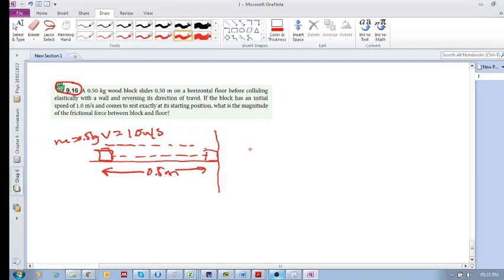So what do we know? Well, it starts off with a certain kinetic energy equal to half m v squared, and that is half times the mass 0.5 times the velocity 1 squared, which is 0.25 joules.